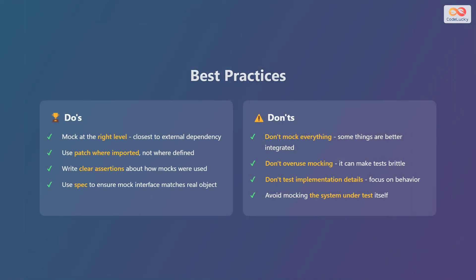Let's discuss some best practices for Python mocking. Do mock at the right level, closest to the external dependency. Do use patch where imported, not where defined. Do write clear assertions about how mocks were used, and use spec to ensure the mock interface matches the real object. On the other hand, don't mock everything, as some things are better integrated. Don't overuse mocking, as it can make tests brittle. Don't test implementation details — focus on behavior. And avoid mocking the system under test itself.